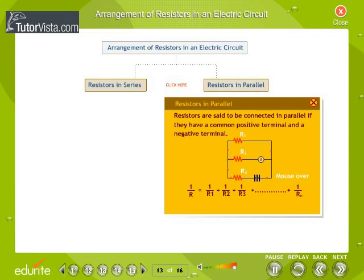Resistors in parallel: Resistors are said to be connected in parallel if they have a common positive terminal and a negative terminal. Effective resistance of a circuit when resistors R1, R2, R3 until Rn are connected in parallel is given by the relation 1 by R equals 1 by R1 plus 1 by R2 plus 1 by R3 plus until plus 1 by Rn.